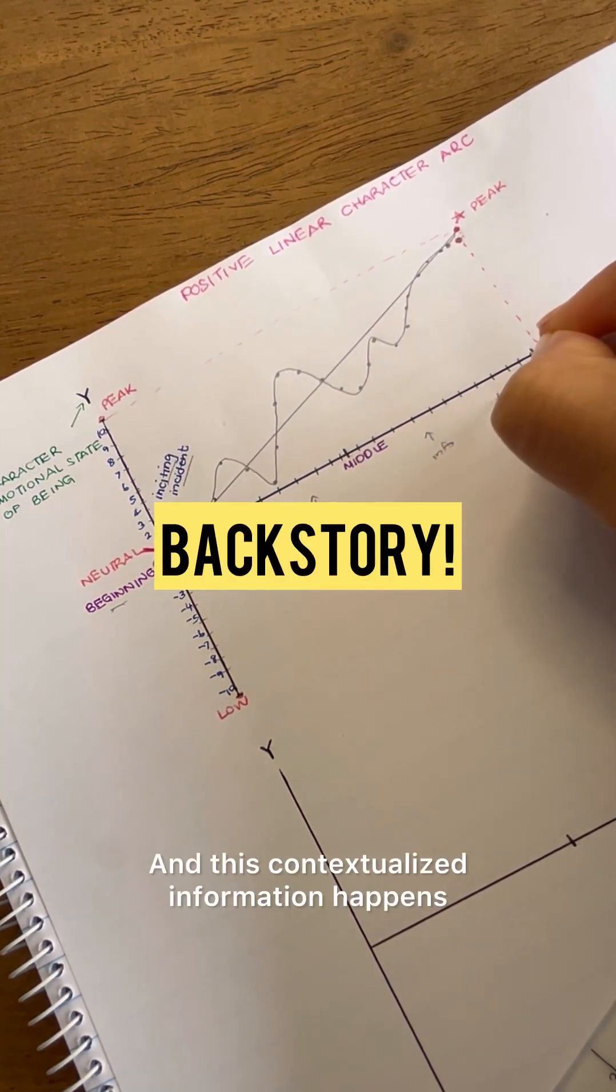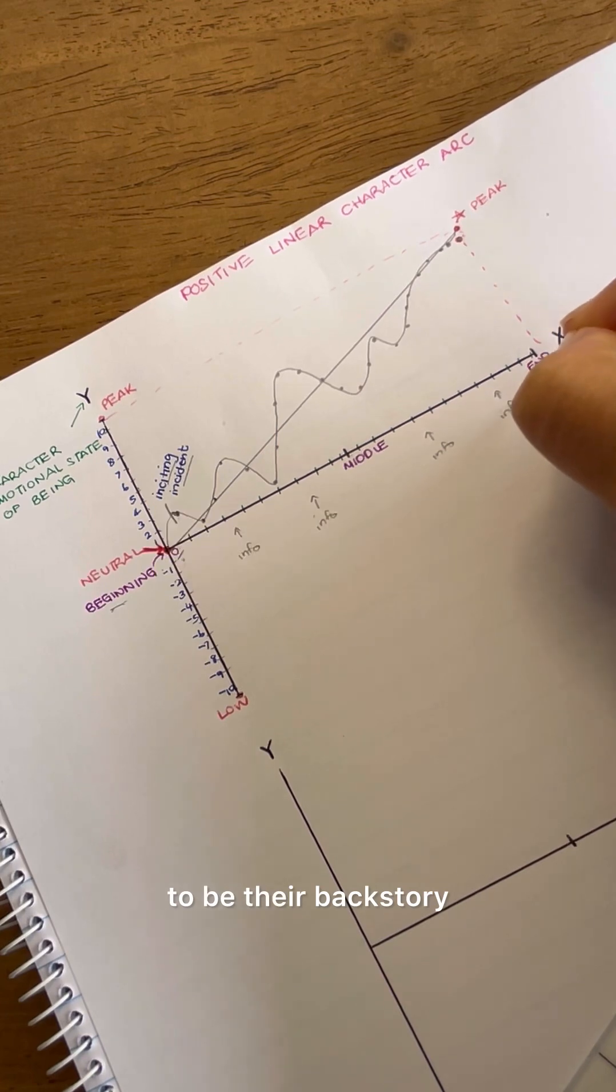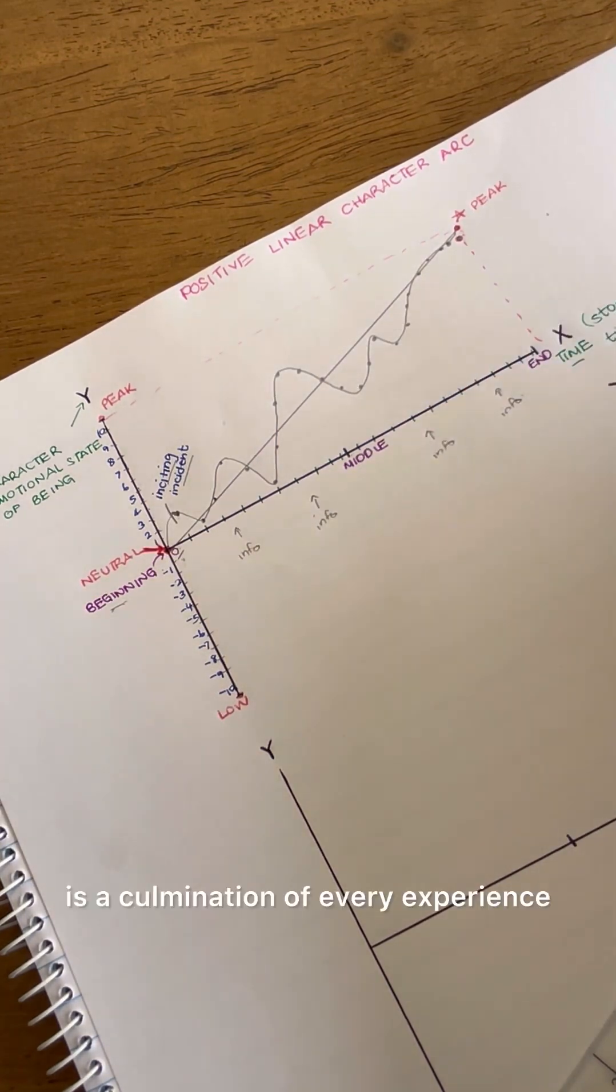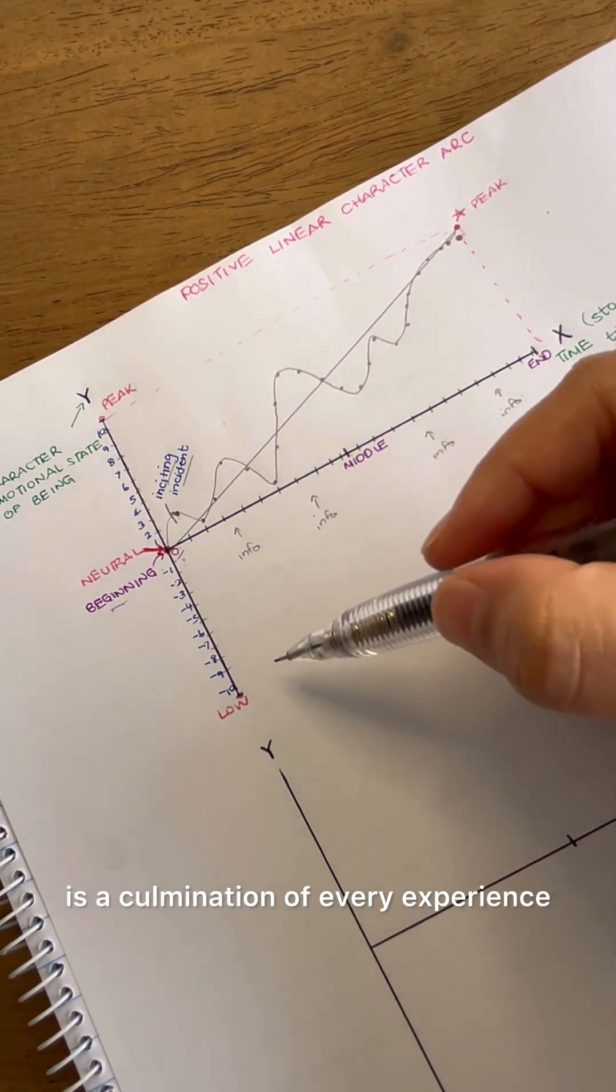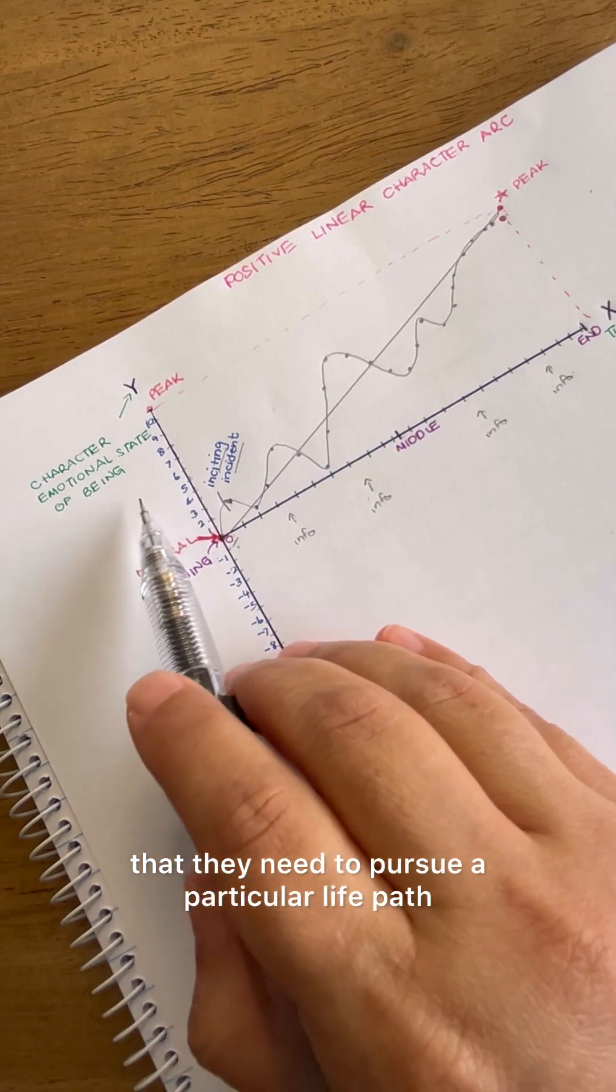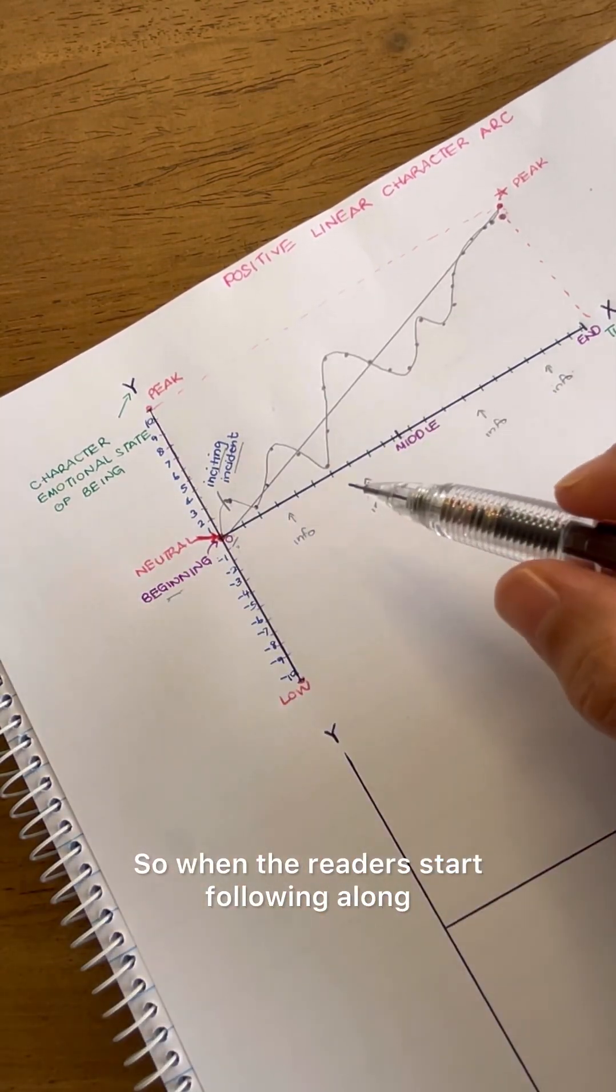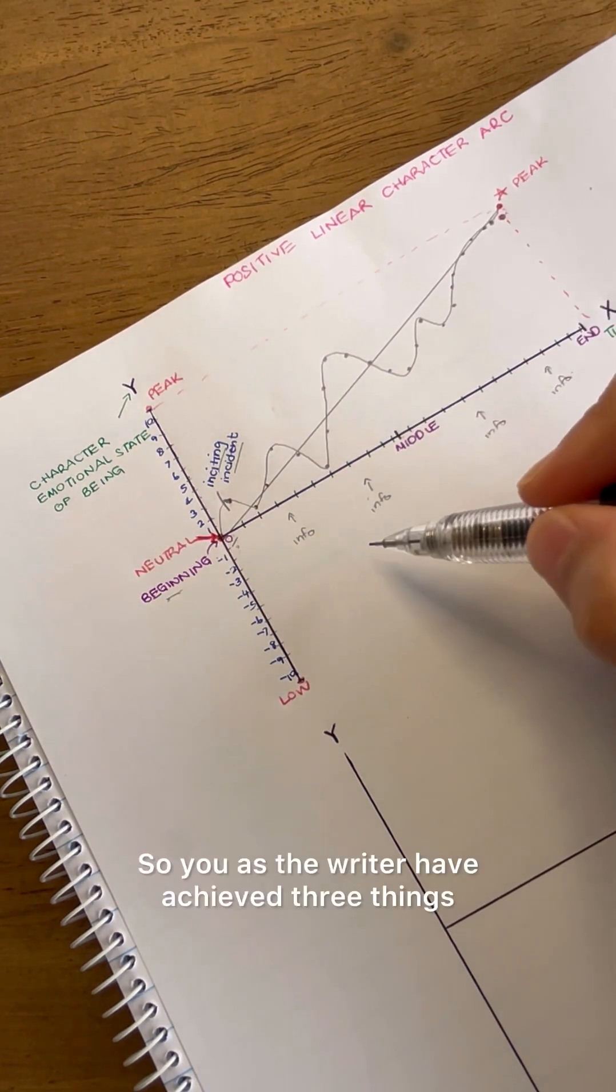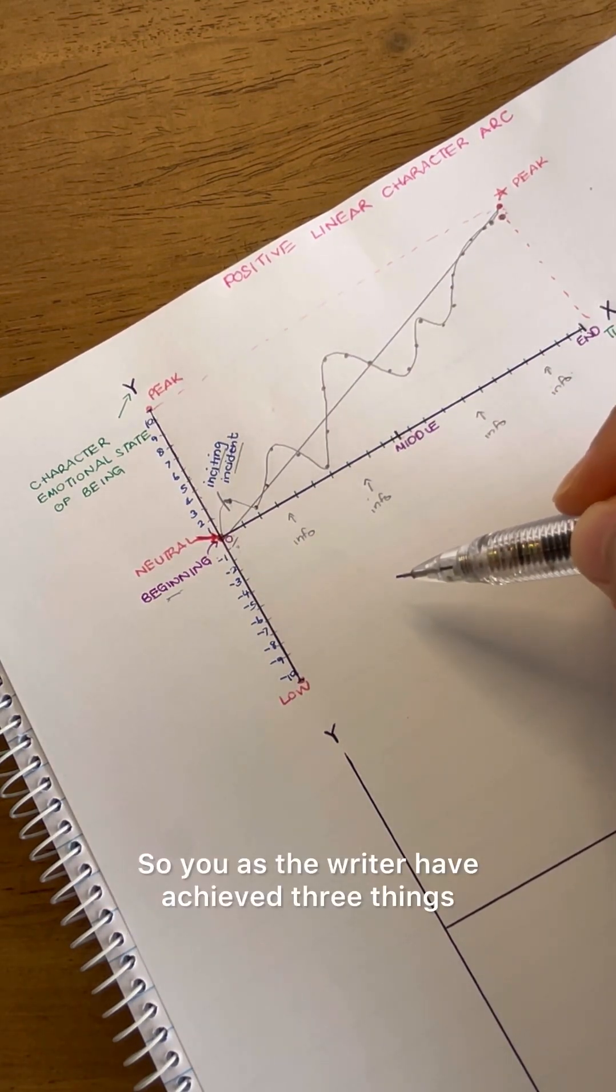And this contextualized information happens to be their backstory. The character, like every single human being on the planet, is a culmination of every experience that has shaped them into believing that they need to pursue a particular life path. So when the readers start following along, they gain perspective from this backstory. So you as the writer have achieved three things.